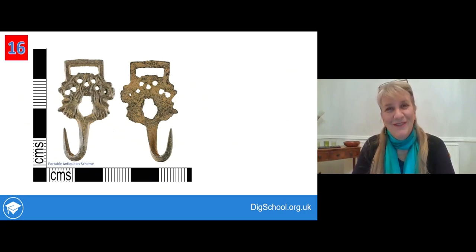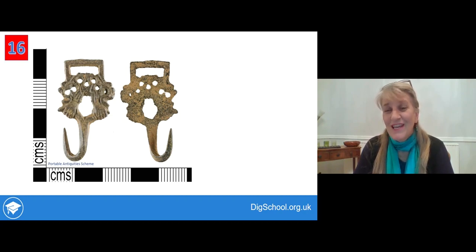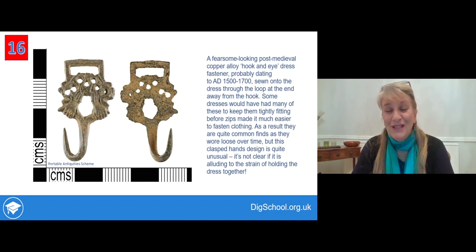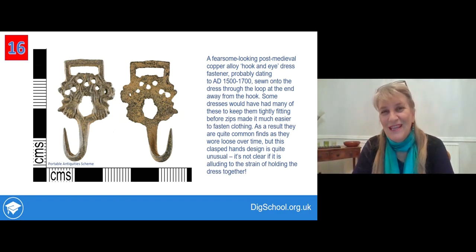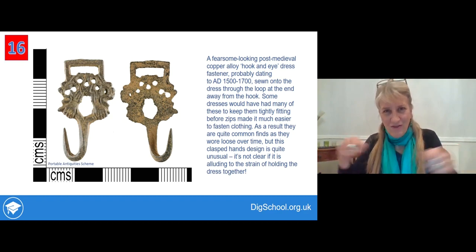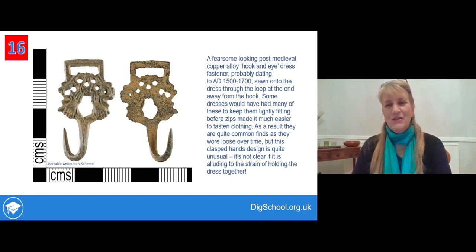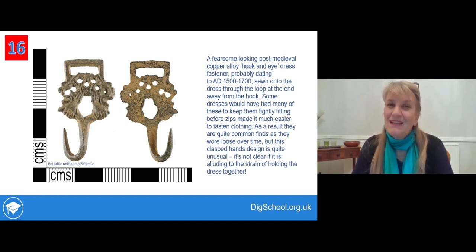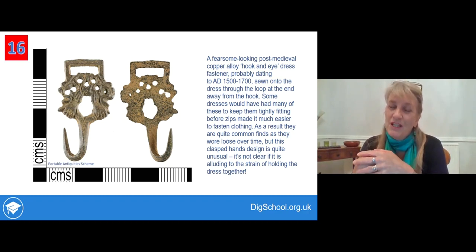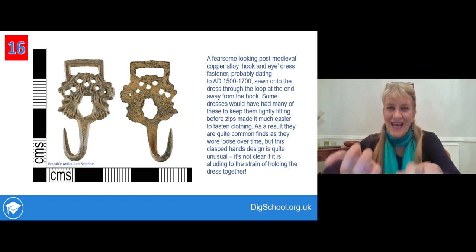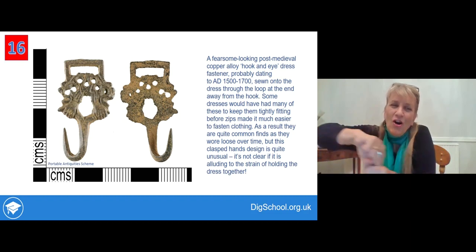Then there are these fearsome-looking objects — you can see them from the front and the back — which look like a fishhook or something like that. But actually they're medieval and early modern dress fasteners, sort of like a hook and eye, just holding your dress together before we had zips or any easier way of doing that. You can only imagine how many fingers must have got hurt on those sharp hooks trying to pull together a dress, particularly a tight-fitting bodice. They are quite common finds. Perhaps if they were holding a very tightly fitting dress to make you look as thin in the middle as possible, they'd be under a bit of strain — and one does wonder whether those hands grasping the fitting are actually alluding to the effort of holding the dress together.